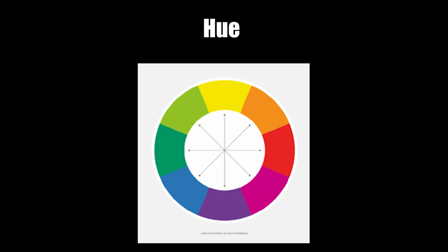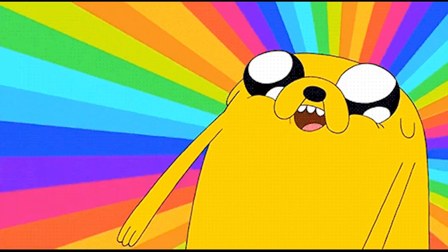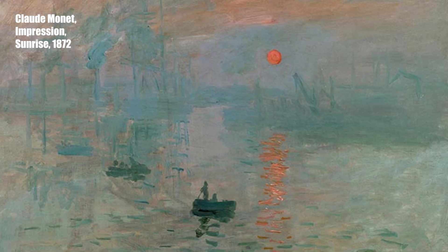HSV stands for hue, saturation, value — it could also be called hue saturation brightness. Hue means the color, like red, green, blue, yellow, etc. Saturation means how much of that color — in a cartoon the colors tend to be more saturated, while in pieces with deeper meaning the saturation tends to be lower. Value just means the brightness or darkness of a color.